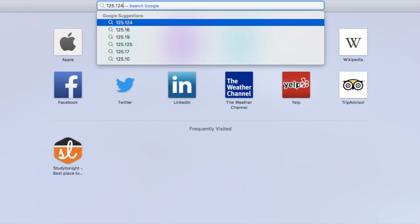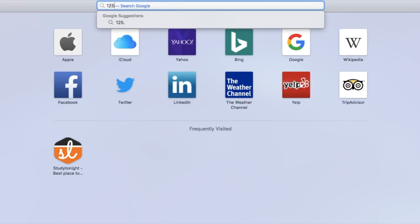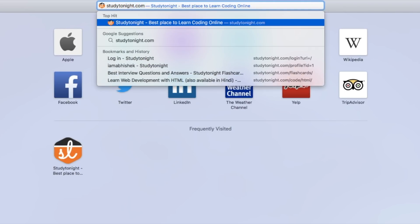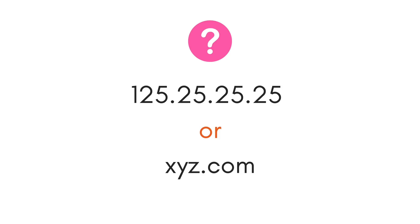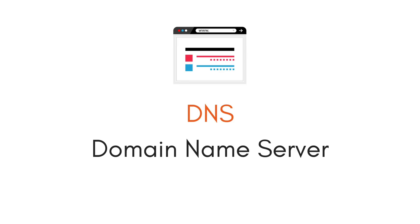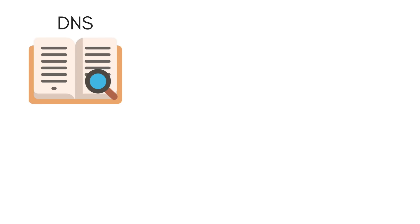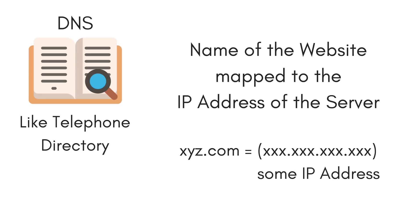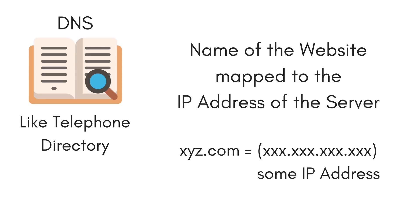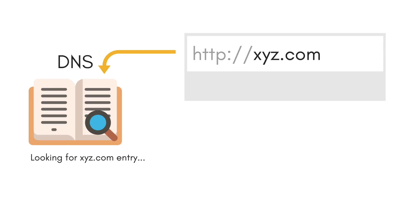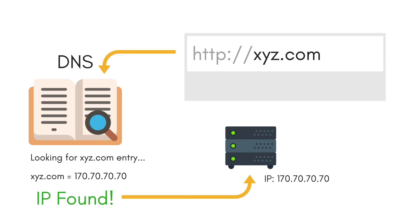You might say that we do not use the IP address to visit a website — we use a domain name, like studytonight.com. To answer this, we need to understand a new concept: the DNS server. DNS servers are like telephone directories. They store the website name and the IP address of the server on which the website is hosted. So whenever you request a website from your browser, first the request goes to a DNS server, the IP address of the web server is found, and the request is then forwarded to that IP address.